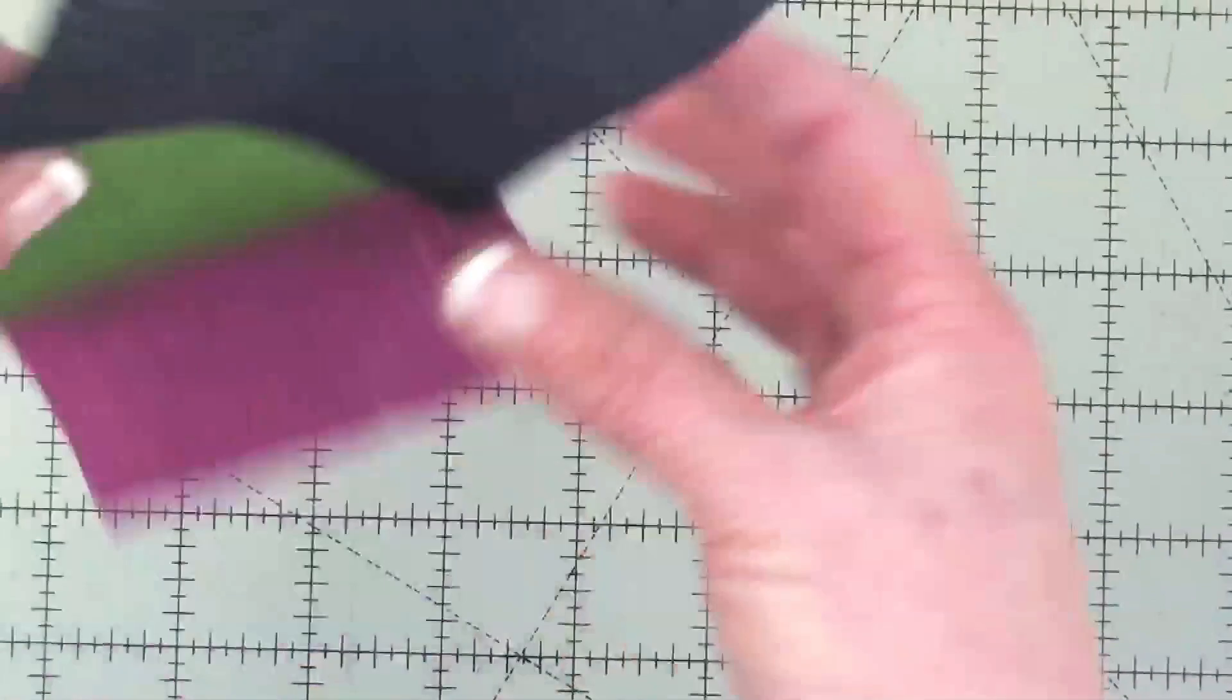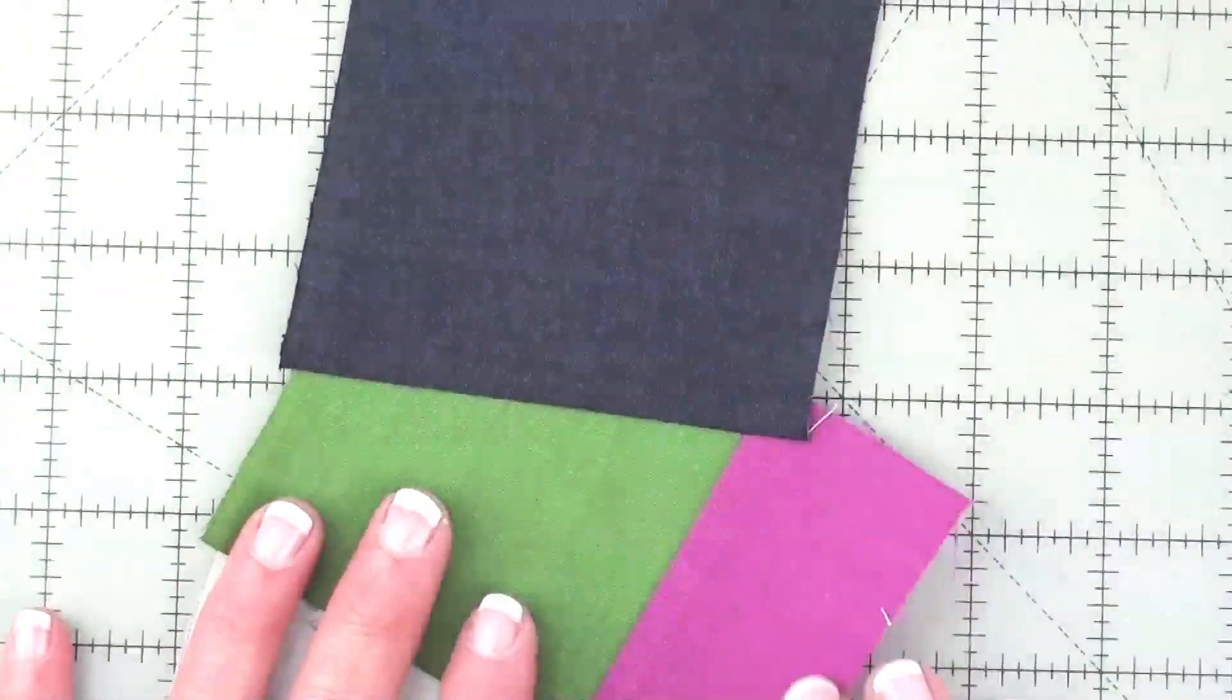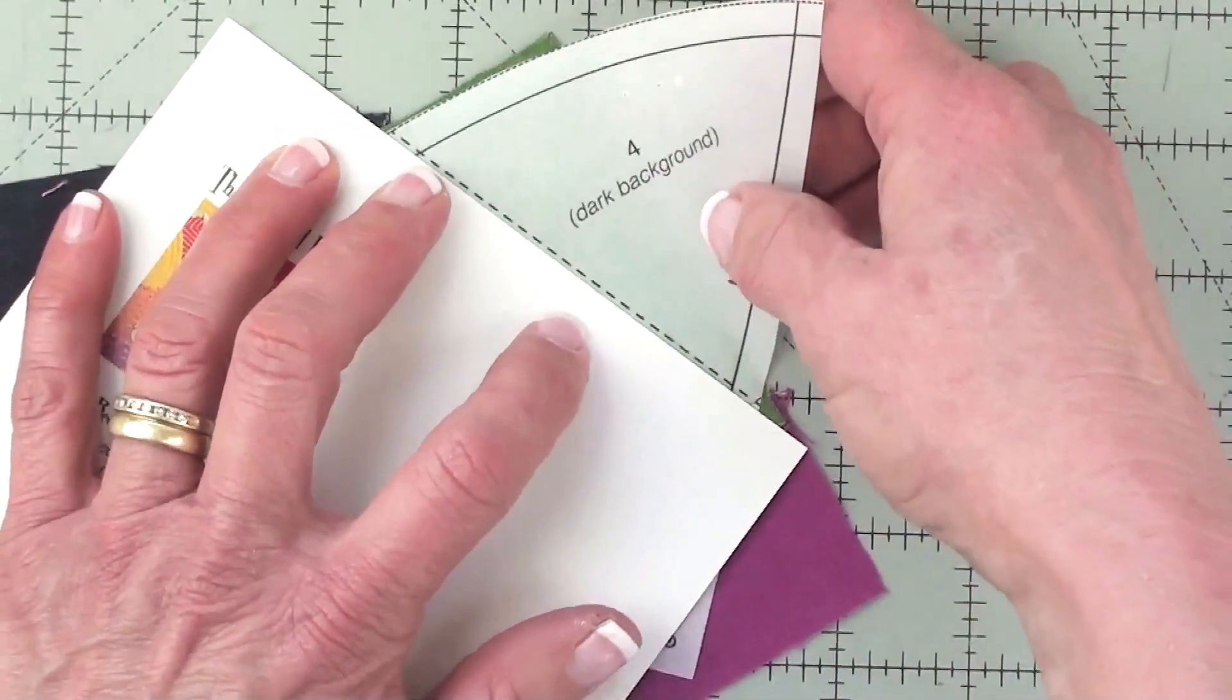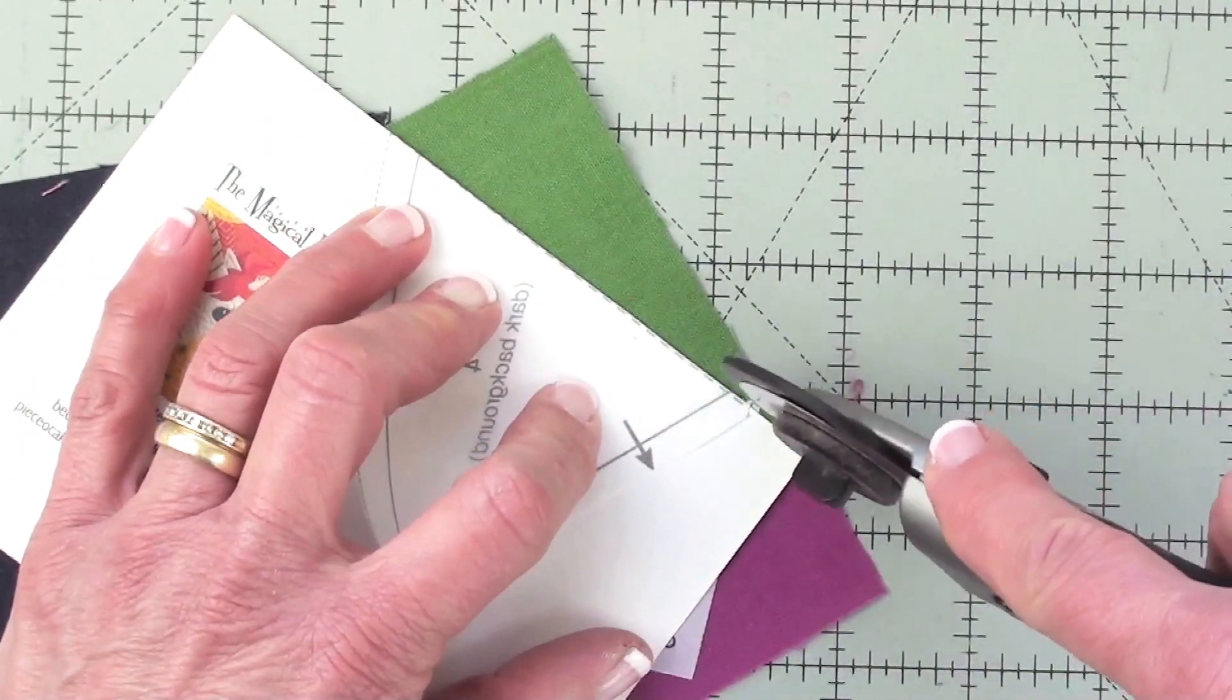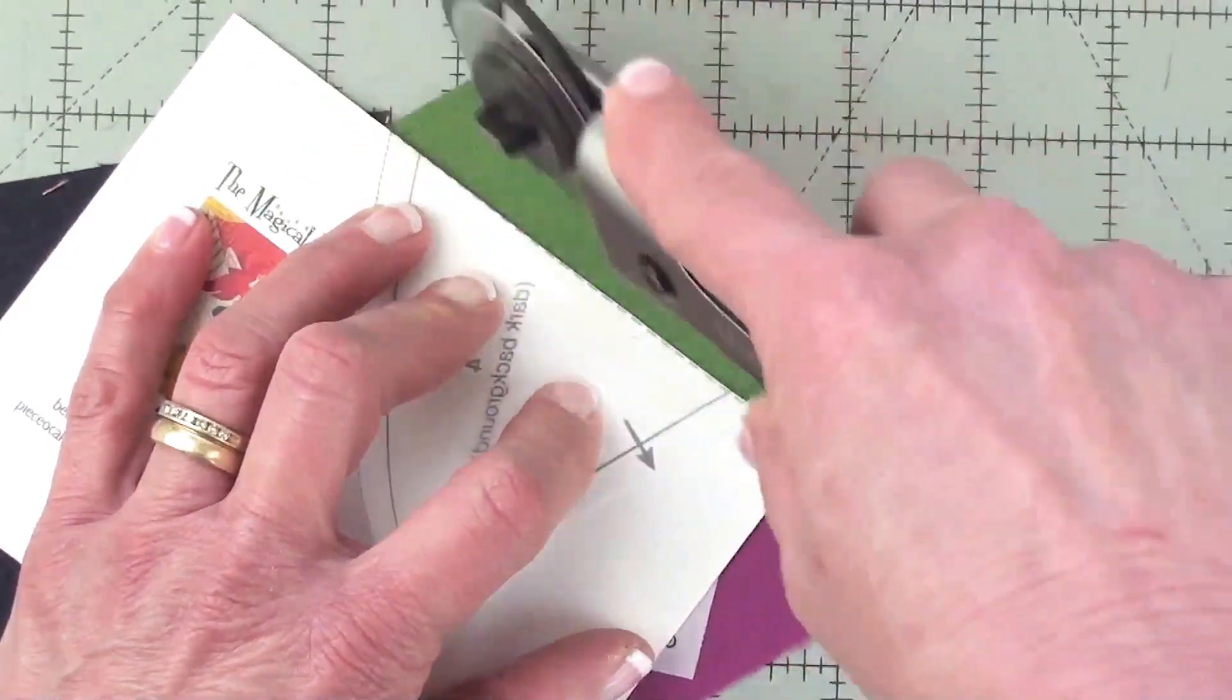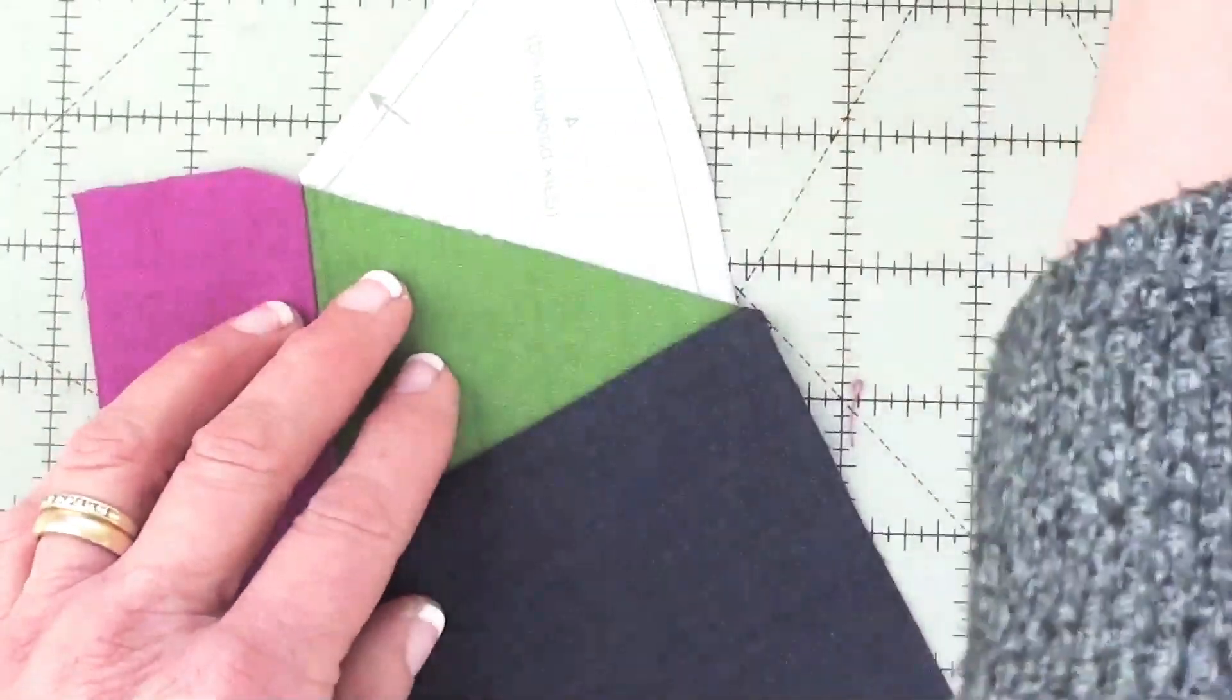Once that's sewn as I have it here and pressed open, I would turn this over and trim away that excess fabric on the number four side just like that and then I would position the number four square.